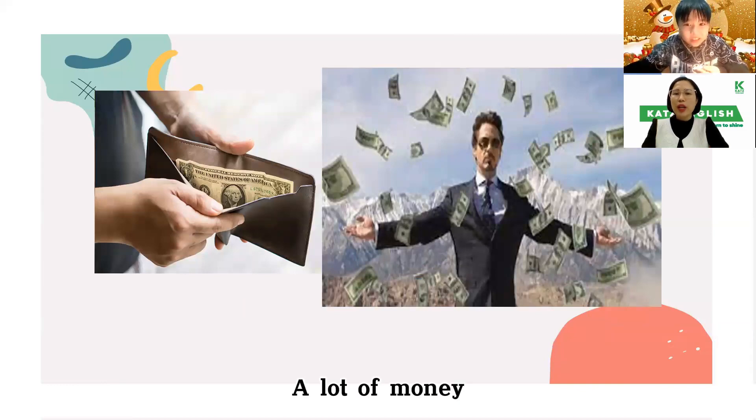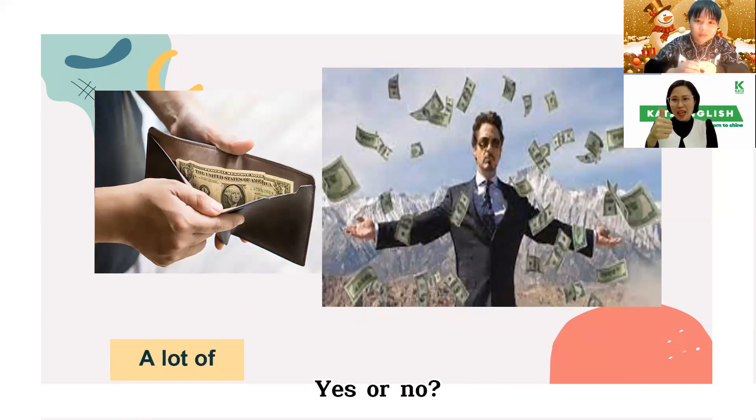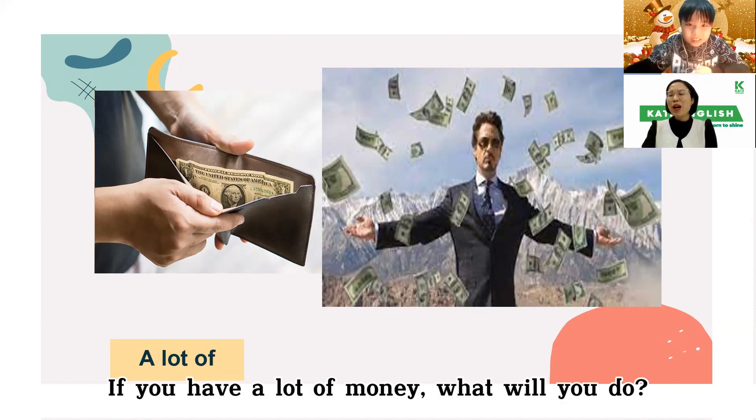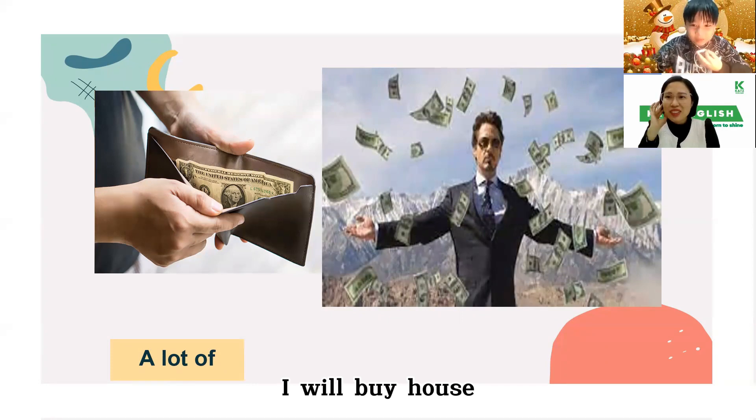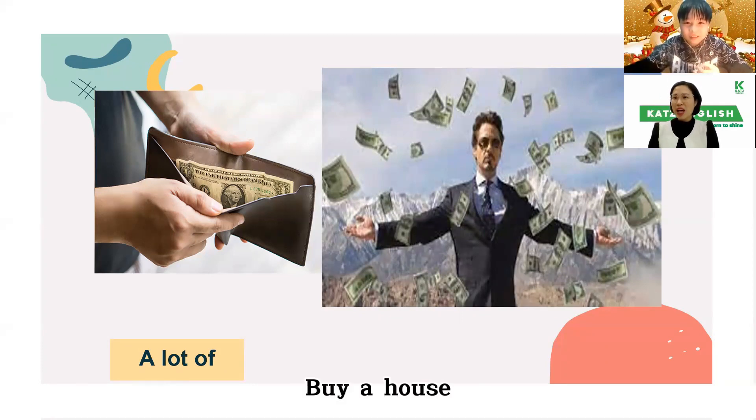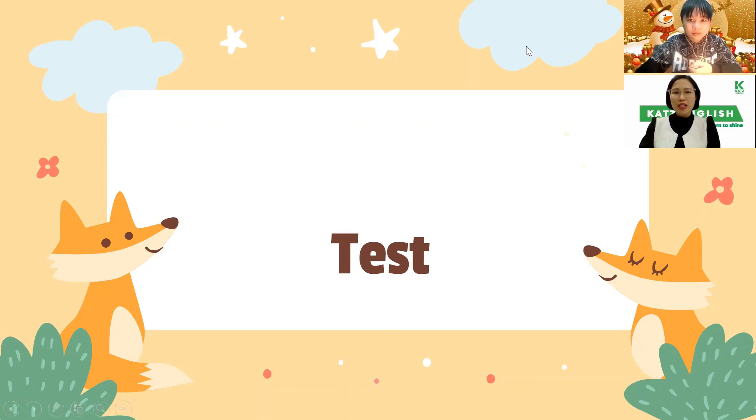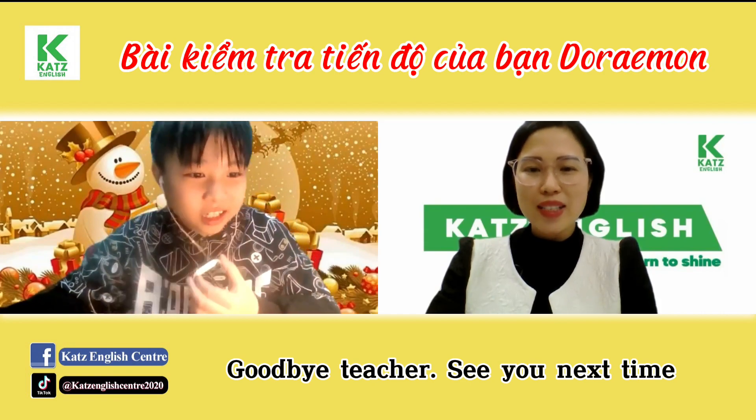And this is? A lot of money. Okay, a lot of money. Do you want to have a lot of money? Yes or no? Yes. Yes. Okay. If you have a lot of money, what will you do? I will buy a house. Okay, buy a house. Wow. Very big dream. Okay, I think that is the end of the test today. You have done very well. So, thank you, Doraemon. And see you next time. Bye, teacher. See you next time. Bye.